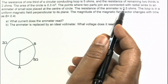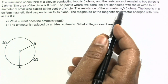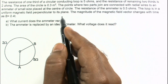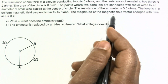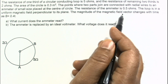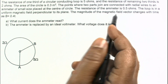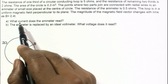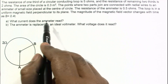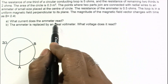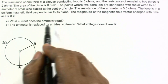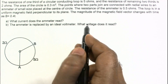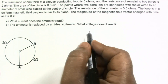The resistance of the ammeter is 0.5 ohms. The loop is in a uniform magnetic field perpendicular to its plane. The magnitude of the magnetic field changes with time as B = 0.40t. We need to find: (a) what current does the ammeter read, and (b) if the ammeter is replaced by an ideal voltmeter, what voltage does it read?